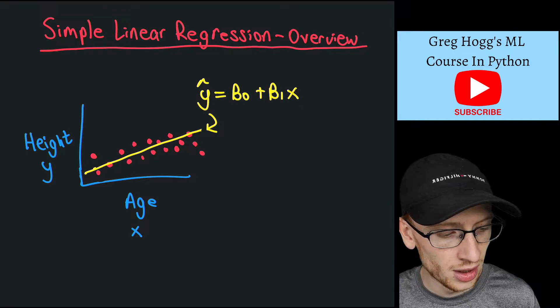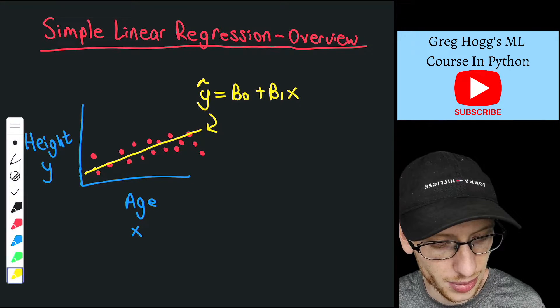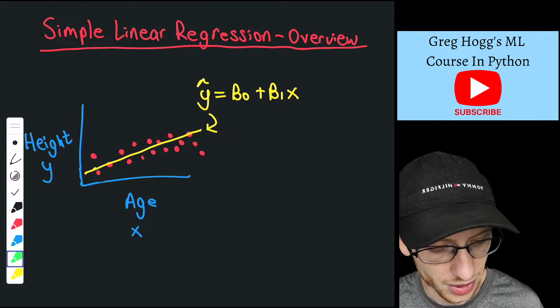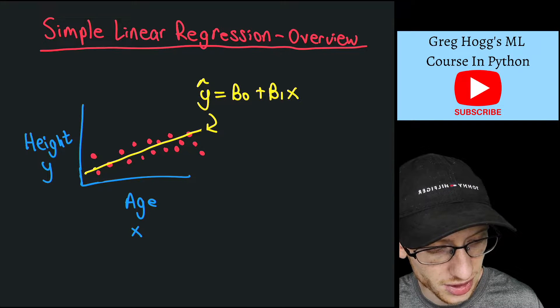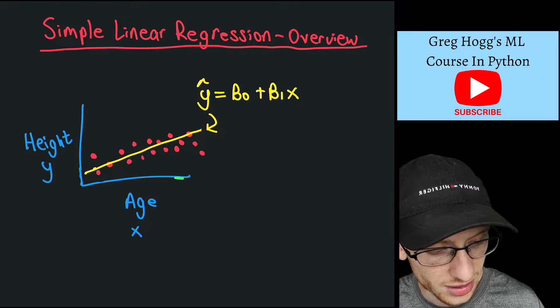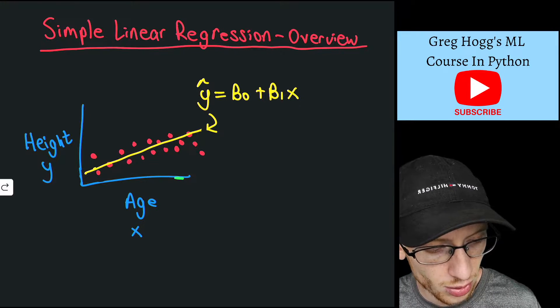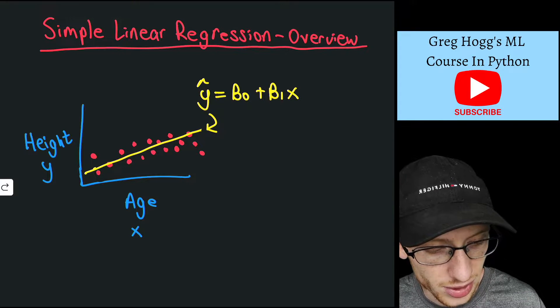So we're going to introduce the idea by talking about basically our points in our line here. You can see we have our function, which is for any data point, we can input, for this value of x, we would guess this value. Well, we are clearly wrong in many places.